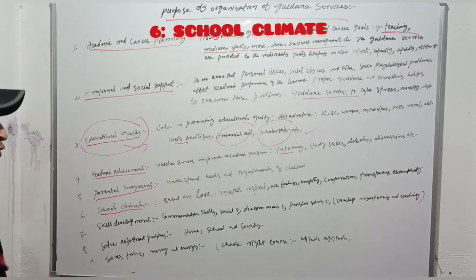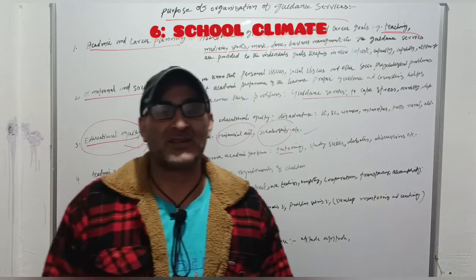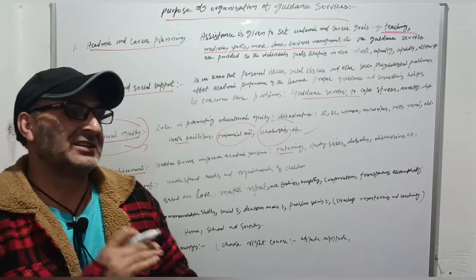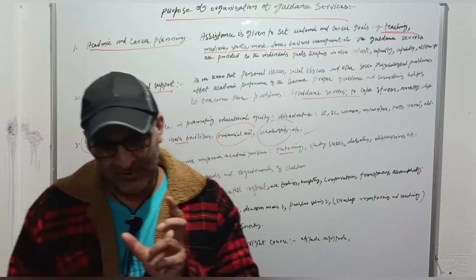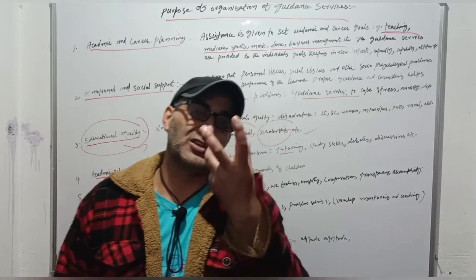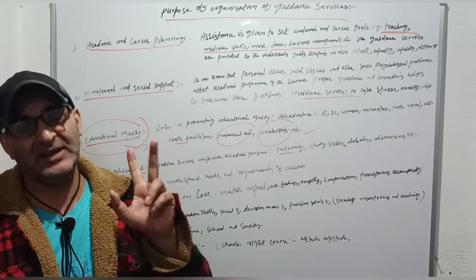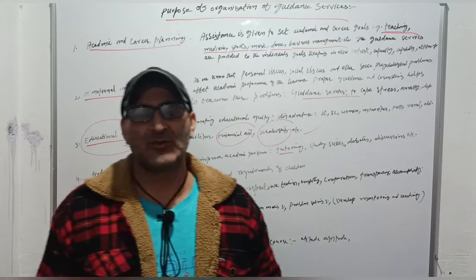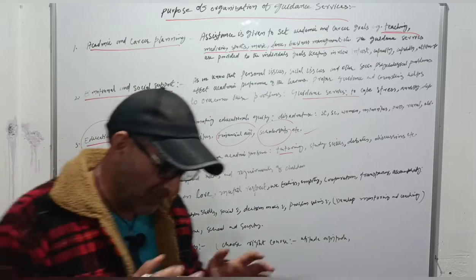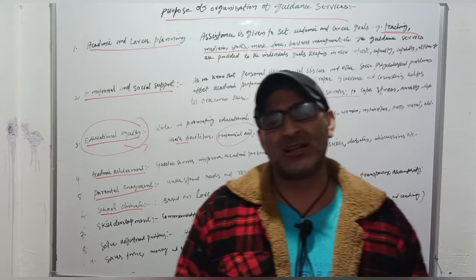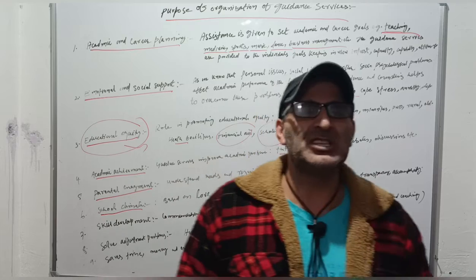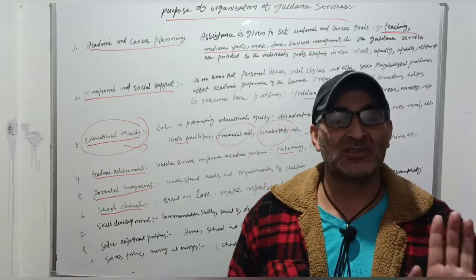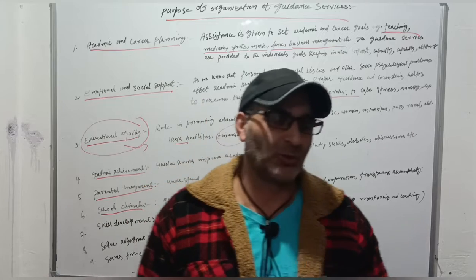Number 6: School Climate. When we talk about progressive education philosophy, John Dewey believes that education is tri-polar: learner, teacher, and environment. Until or unless we create a healthier, congenial type of atmosphere, the true learning process is not possible. We cannot achieve the aims and objectives of education. We cannot lead the learner towards progress, prosperity, and overall growth and development.